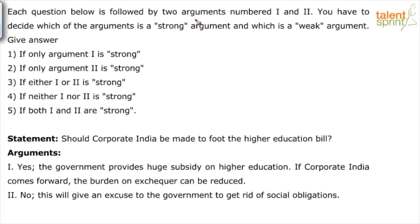Each question below is followed by two arguments numbered 1 and 2. You have to decide which of the arguments is a strong argument and which is a weak argument. Give option 1 if only argument 1 is strong, option 2 if only argument 2 is strong, option 3 if either 1 or 2 is strong, option 4 if neither is strong, and option 5 if both are strong. So basically the options are all based on identifying strong arguments.